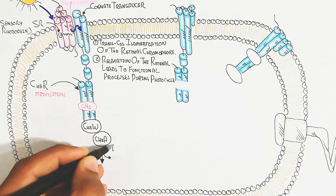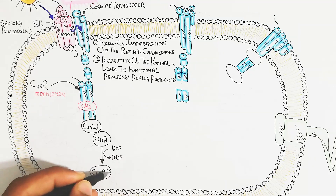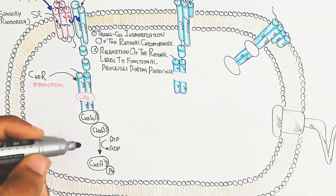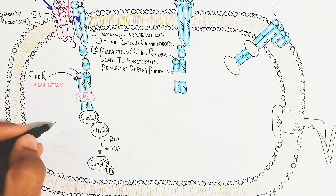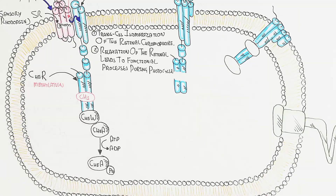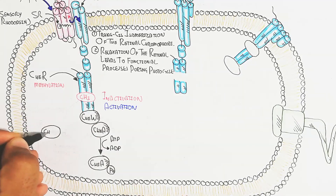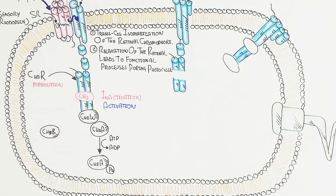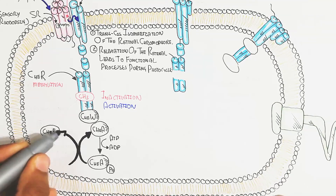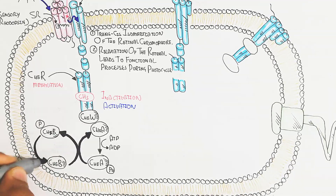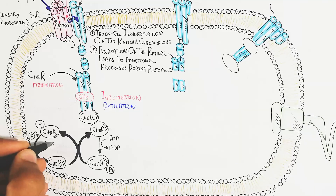When demethylation occurs due to blue light, it leads to recruitment of CheW and CheA proteins. CheA protein undergoes phosphorylation — acting as an autokinase — leading to CheA-phosphorylated protein activation. Red light, by contrast, leads toward the stimulus but does not drive movement changes; CheA phosphorylation still occurs in this context.